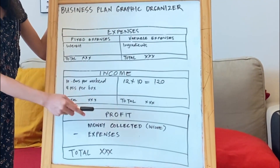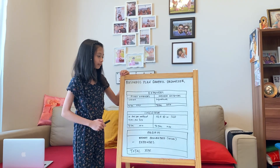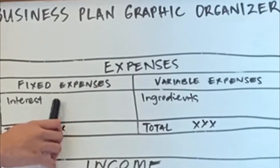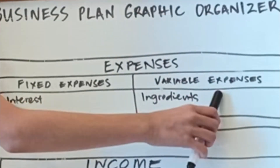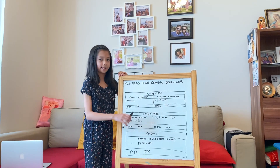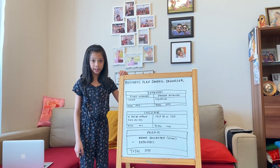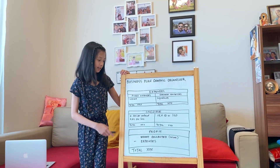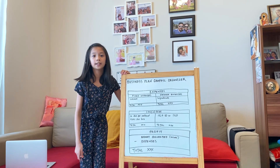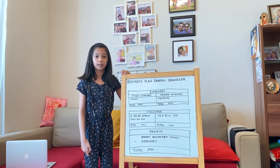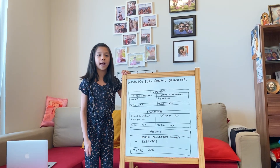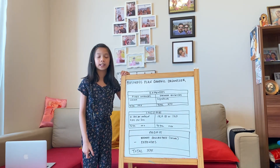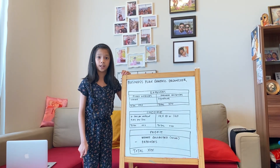Expenses include fixed expenses and variable expenses. Fixed expenses are costs that do not change — an example of a fixed expense is interest, which is the money charged for borrowing money from a bank. Variable expenses are costs that do change.